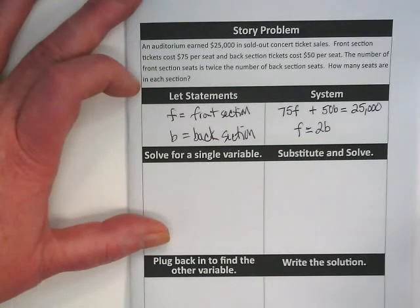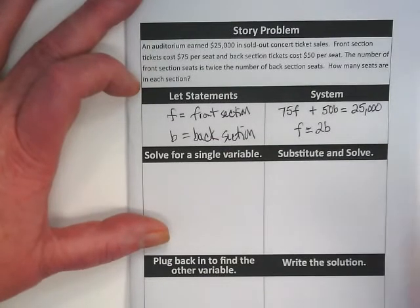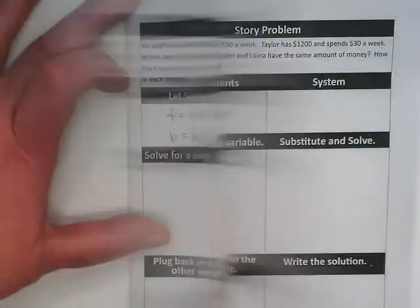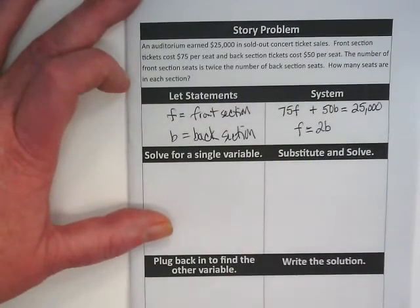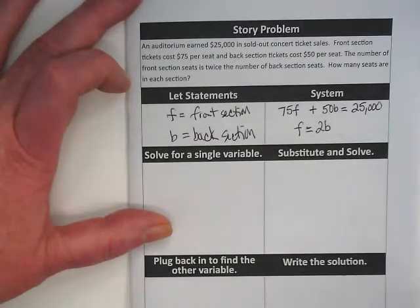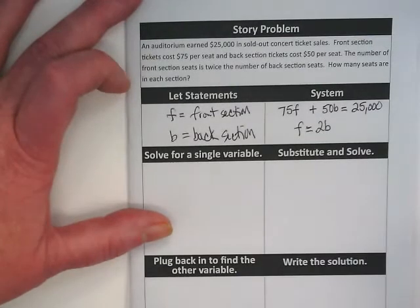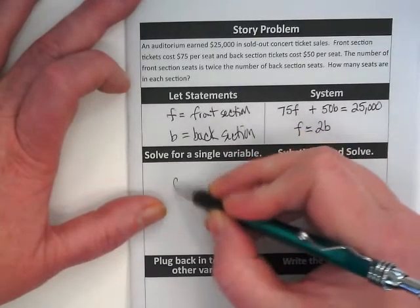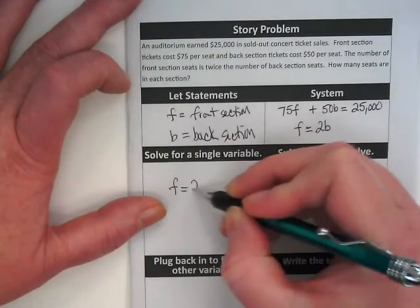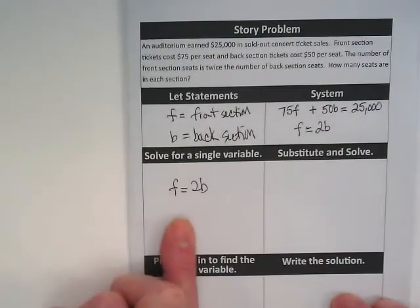Our next step is to solve for a single variable. This packet, for the most part, these are easiest to solve if you're using substitution. One of these equations is already solved for a single variable. The equation F is equal to 2B is already solved for F.